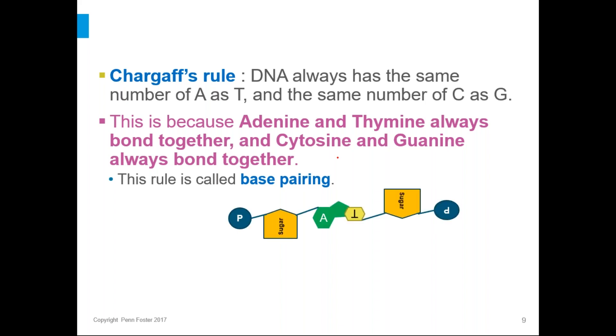There's just some images to reinforce it. We have adenine bonded to thymine, and we have guanine bonded to cytosine. That's always how they're going to bond together. You never have an A bonded to a G or an A bonded to a C or bonded to itself. You don't have an A bonded to another A. It only bonds to T, and T only bonds to A, and C only bonds to G, and G only bonds to C.